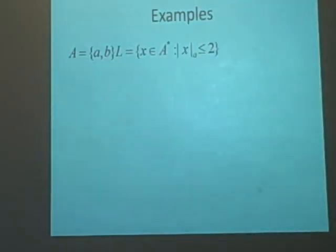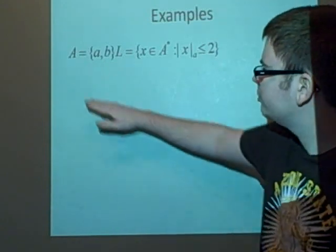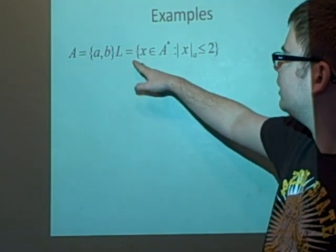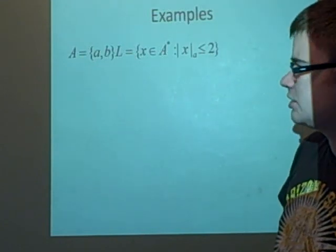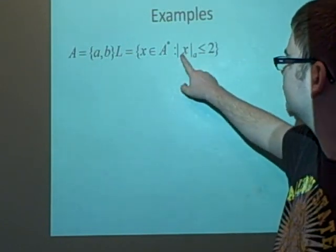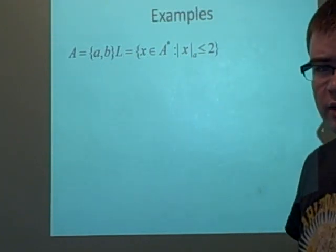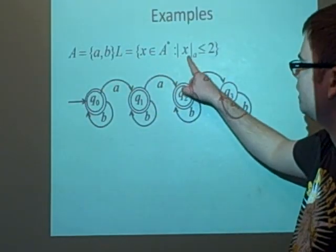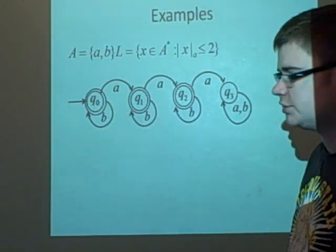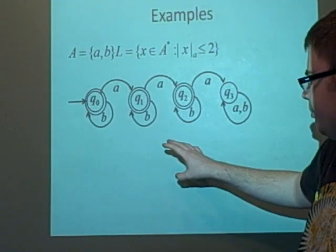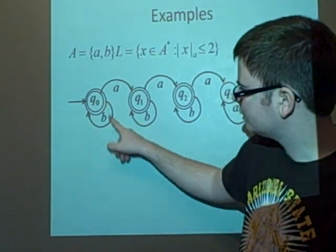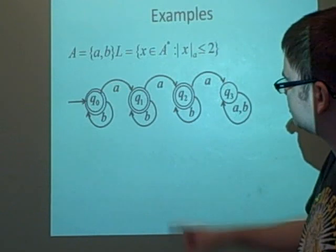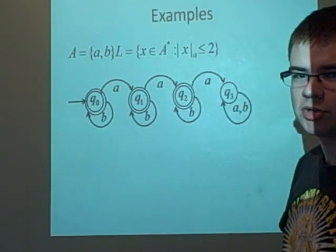Here's another example. We've got our alphabet A = {a,b}, and the language is L = {x ∈ A* : |x|ₐ ≤ 2}. The number of a's in x should be less than or equal to 2. First, the initial state q₀ is also a final state because we can have zero a's. We don't care about b's, so b loops on q₀. When we apply a, we go to q₁, which is also a final state because we've counted one a.